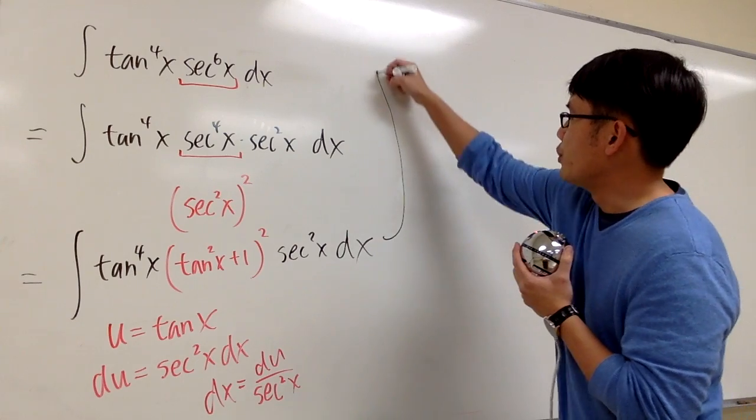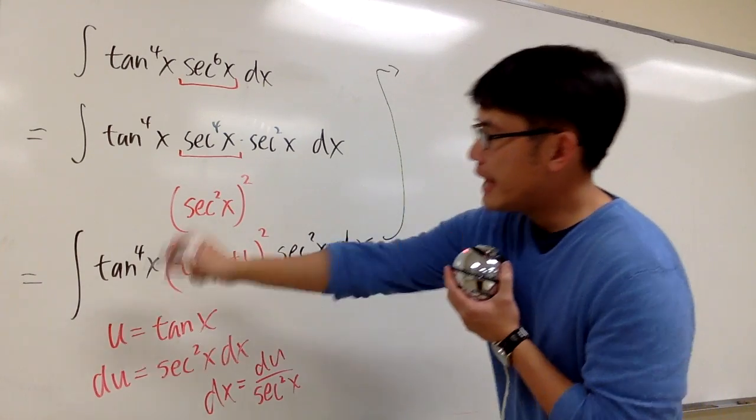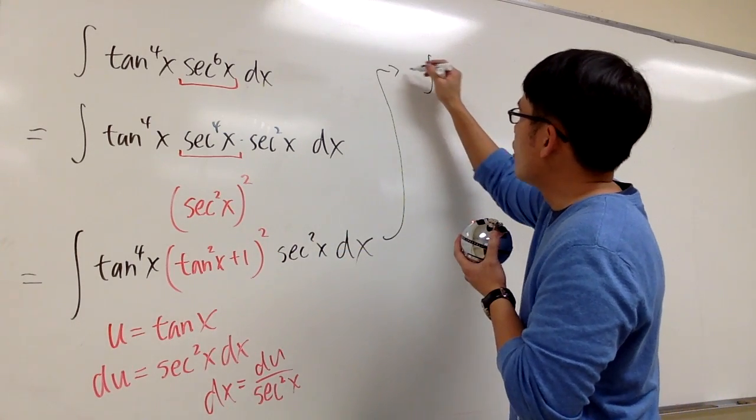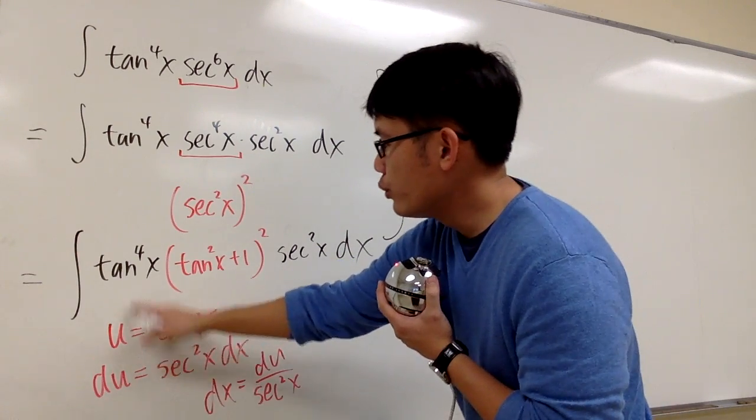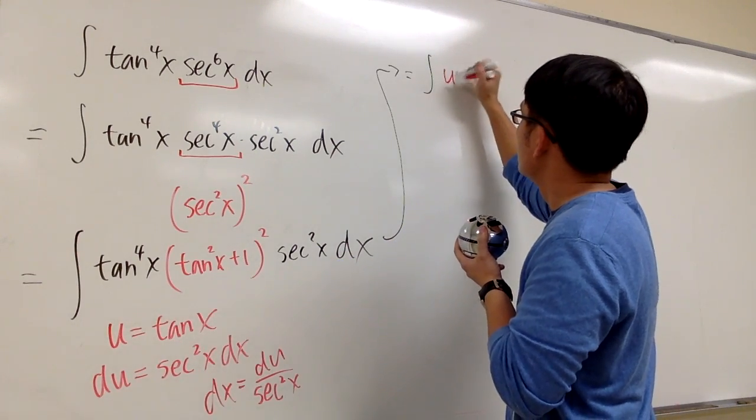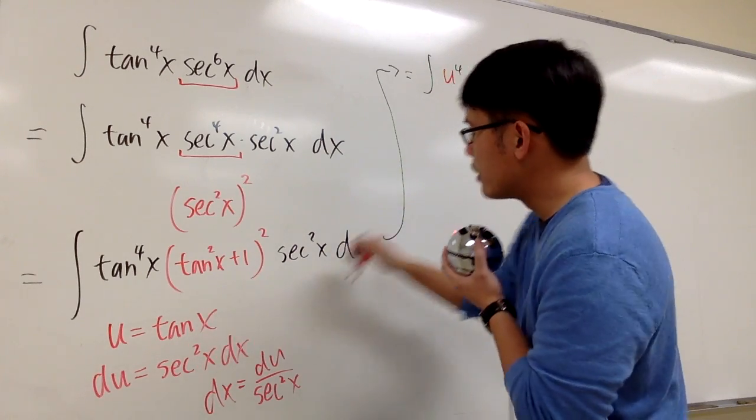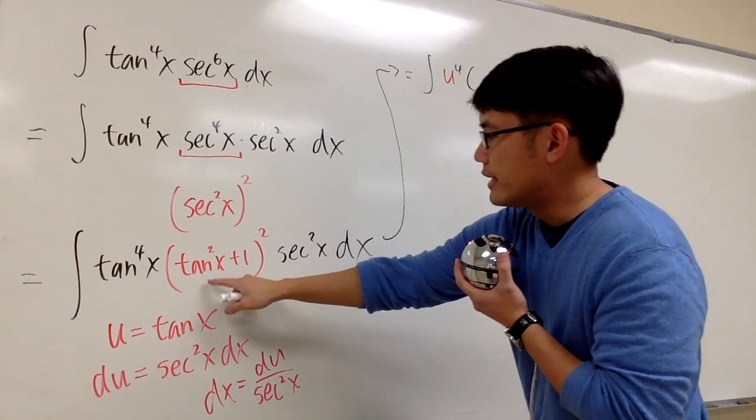Let's take a look. Let me just bring it up right here. Now the integral is going to be integral of tangent is going to be u, so we have polynomials now, u to the fourth power, and then this right here, we have the parentheses, tangent squared.